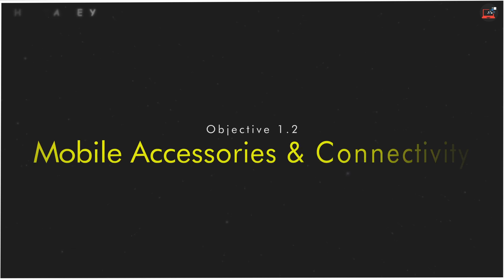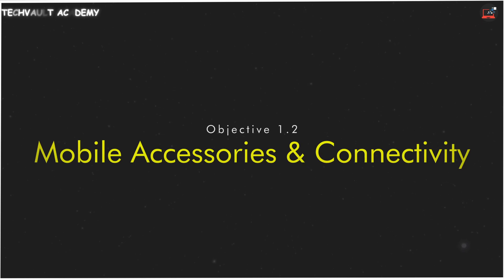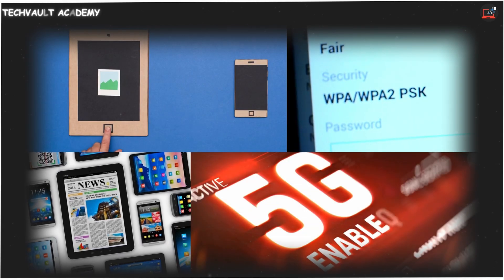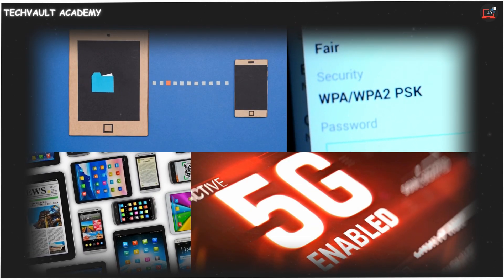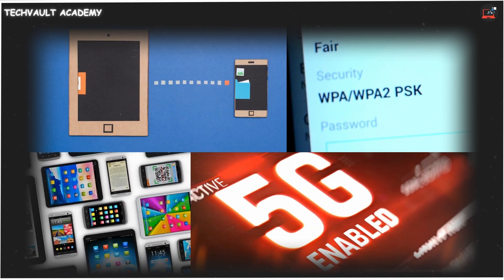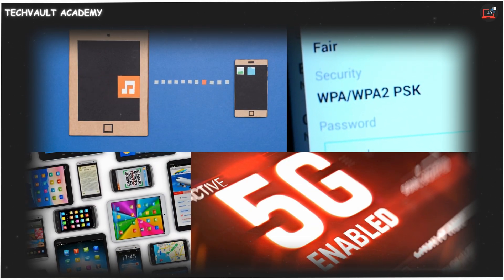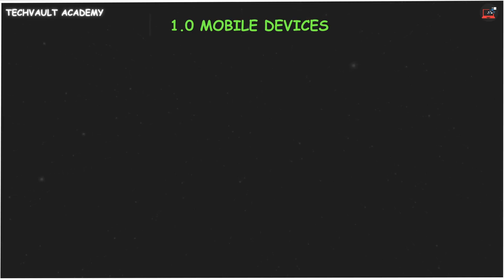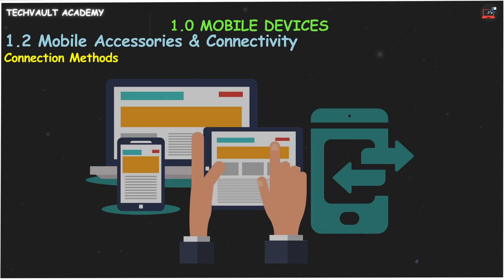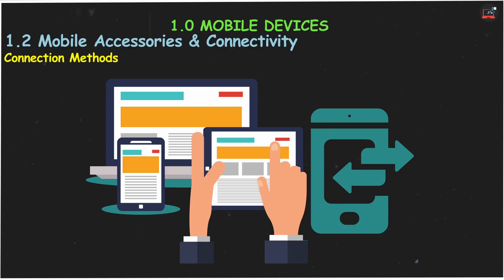We're diving into objective 1.2, comparing and contrasting accessories and connectivity options for mobile devices. Mobile devices are hubs of activity, so let's explore how they talk to other gadgets and how we enhance their functionality. Think of these as the pathways data travels to and from your mobile device.